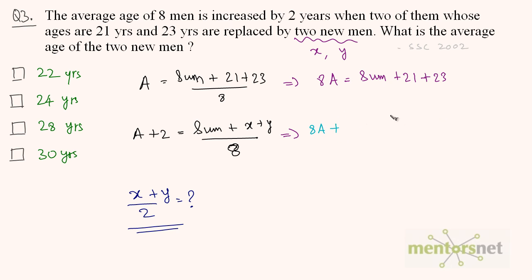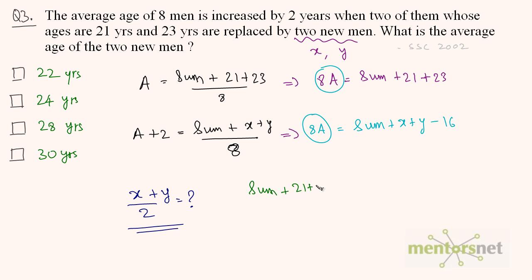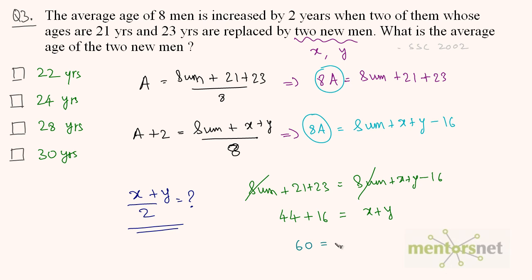Setting the two expressions equal: sum plus 21 plus 23 equals sum plus X plus Y minus 16. The sum cancels out, leaving 44 plus 16 equals X plus Y, so X plus Y equals 60. We need X plus Y divided by 2, so dividing both sides by 2 gives X plus Y divided by 2 equals 30. The average age of these two new men is 30 years.